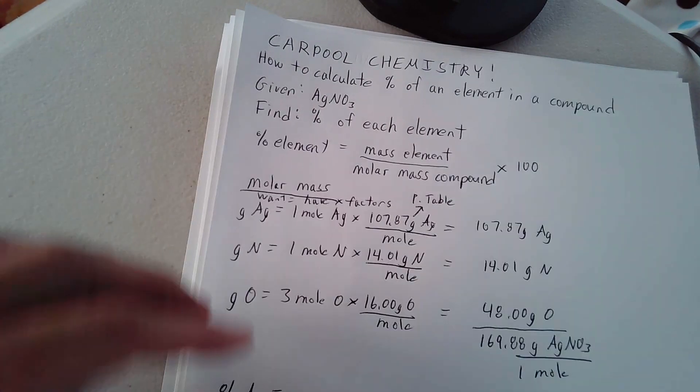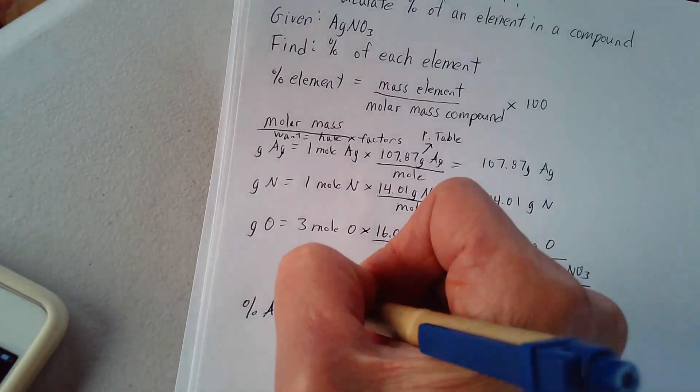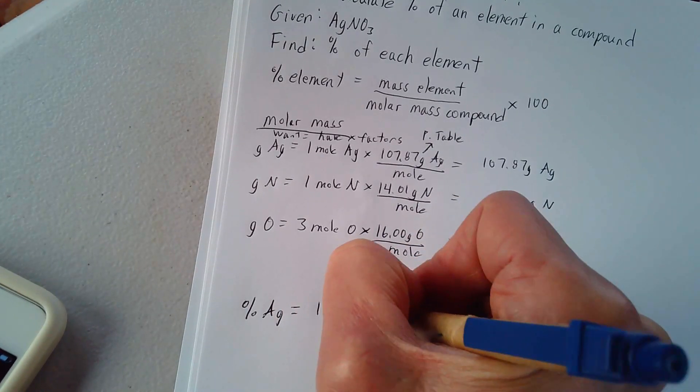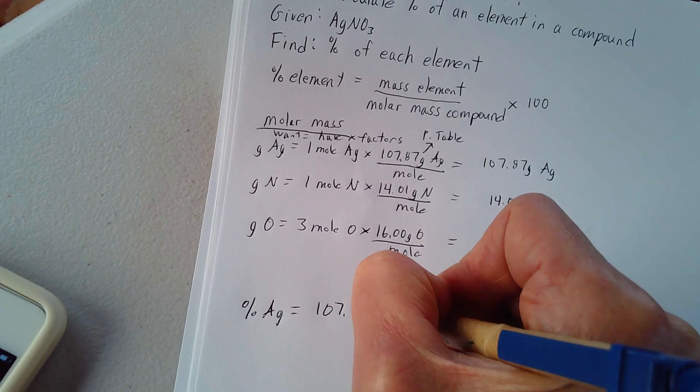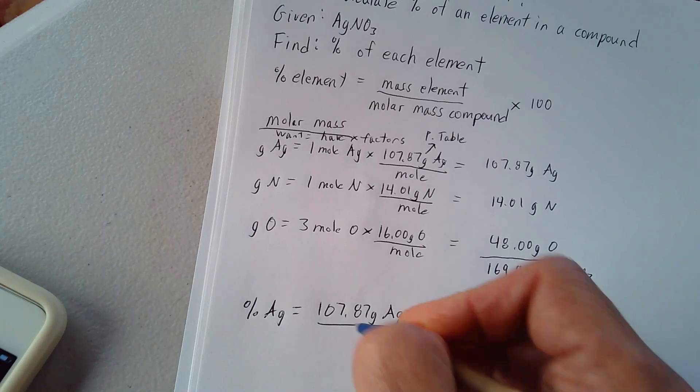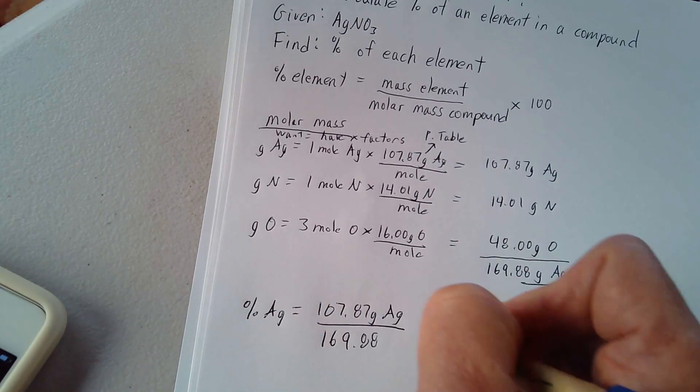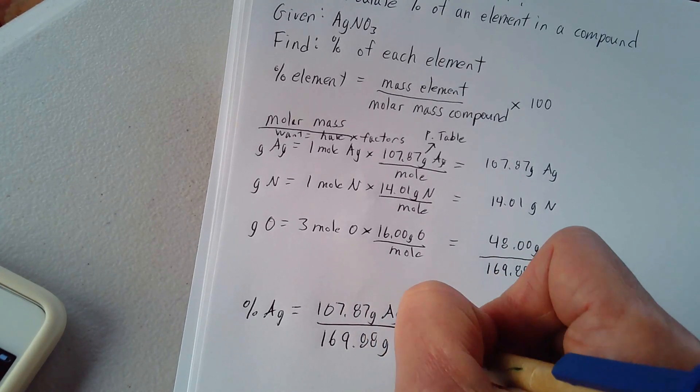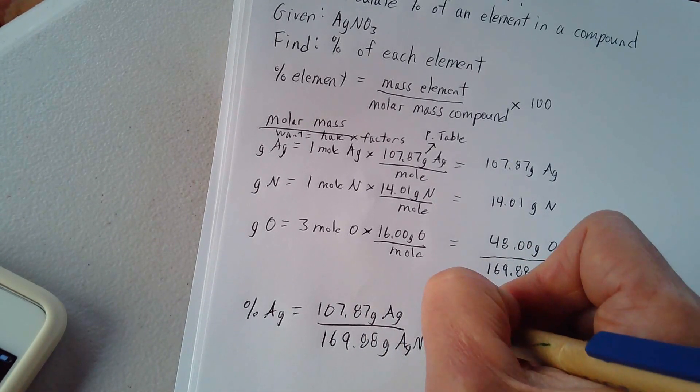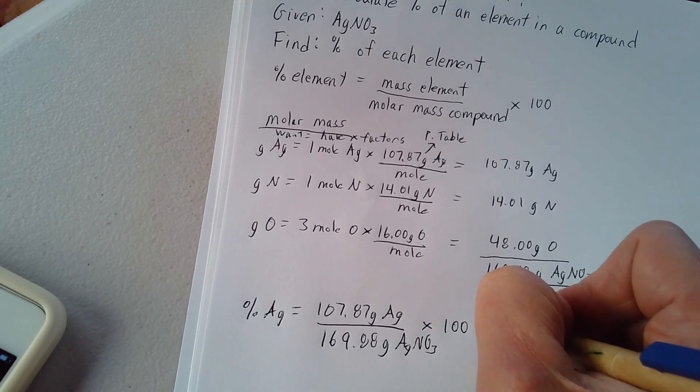So you put down in your fraction over here, 107.87 grams of silver for every 169.88 grams of AgNO3. And then you turn that into percentage by multiplying by 100.